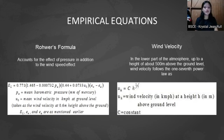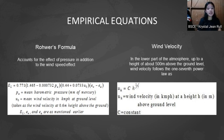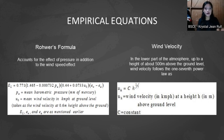Rower's formula accounts for the effect of pressure in addition to wind speed. It includes the mean barometric pressure and mean wind velocity in kilometers per hour at ground level, taken as the wind velocity at 0.6 of the height above ground. The wind velocity in the lower atmosphere up to about 500 meters above ground follows the one-seventh power law: wind velocity equals a constant times the height in meters above ground level raised to the power of 1/7.